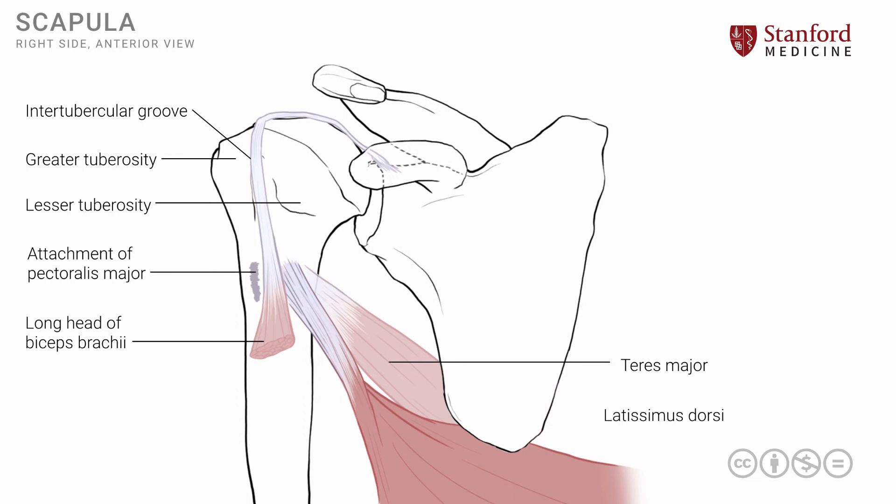This is an interesting arrangement: the pectoralis major and the teres major attach on either side — laterally and medially respectively — and between them lie the two structures of the attachment of the latissimus dorsi muscle and the long head of the biceps brachii.